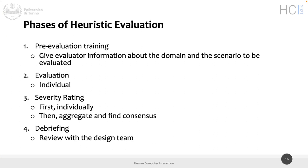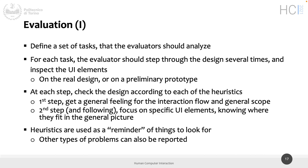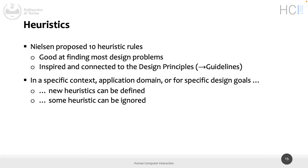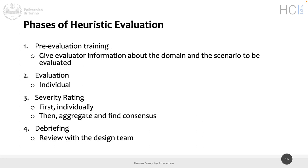Today we are going to finish our conversation on heuristic evaluation. As I was saying last time, you are going to use it next week, next Thursday, for evaluating your paper prototypes. We stopped basically here, concluding with Nielsen proposing 10 heuristics. We are going to cover them quite quickly because they are not so different from the guidelines we have already analyzed.